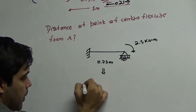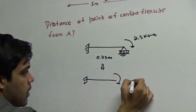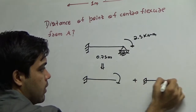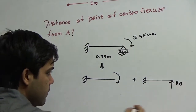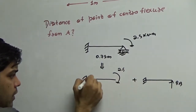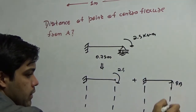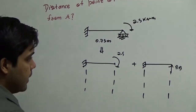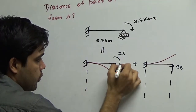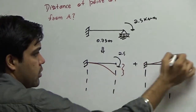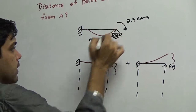I can break this into two parts: a moment plus a reaction Rb. If this is 2.5, I will be calculating the deflection in both cases. These two deflections should be the same because initially the deflection diagram will be like this.